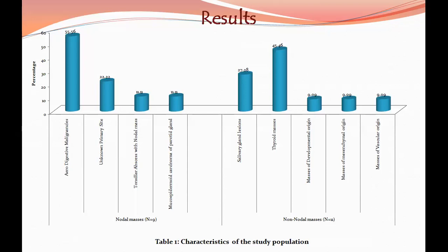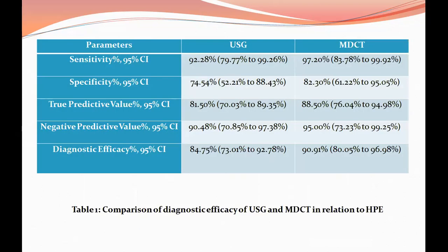In the results, characteristics of the study population are as follows. Out of 20 patients, 9 had nodal masses and 11 had non-nodal masses, of which thyroid masses were the most prevalent.